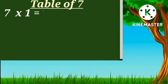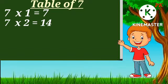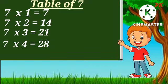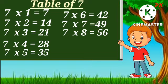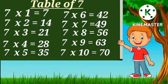Table of 7: 7 1's are 7, 7 2's are 14, 7 3's are 21, 7 4's are 28, 7 5's are 35, 7 6's are 42, 7 7's are 49, 7 8's are 56, 7 9's are 63, 7 10's are 70.